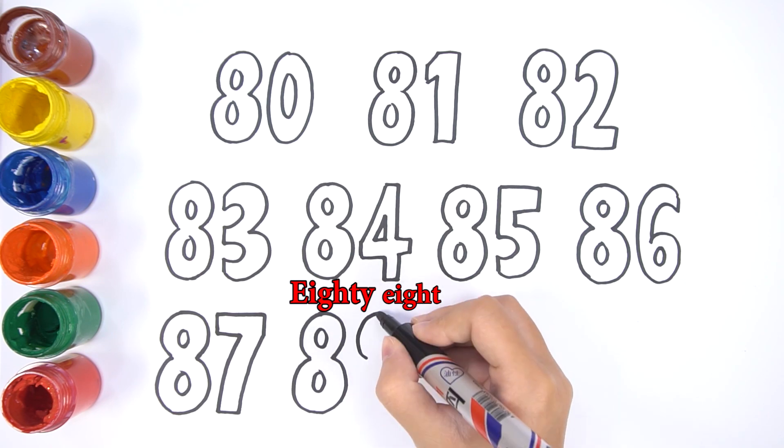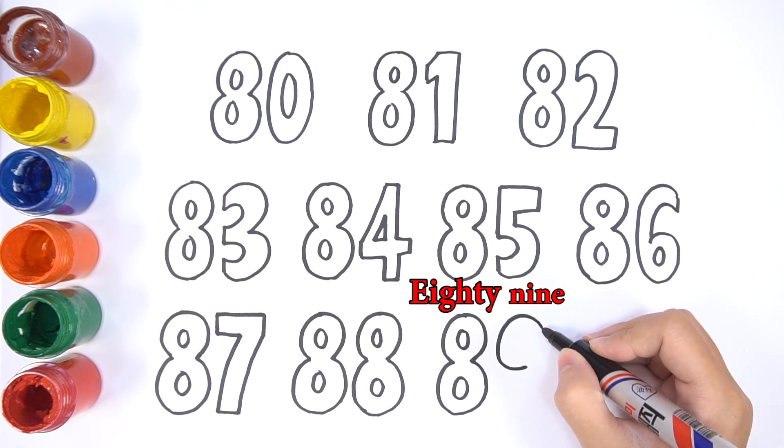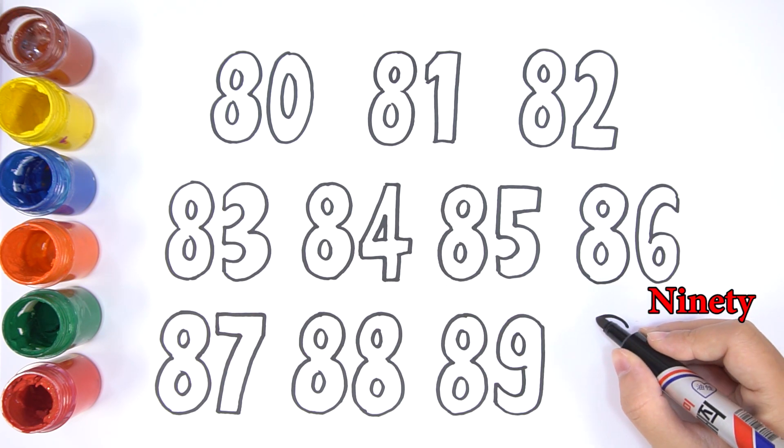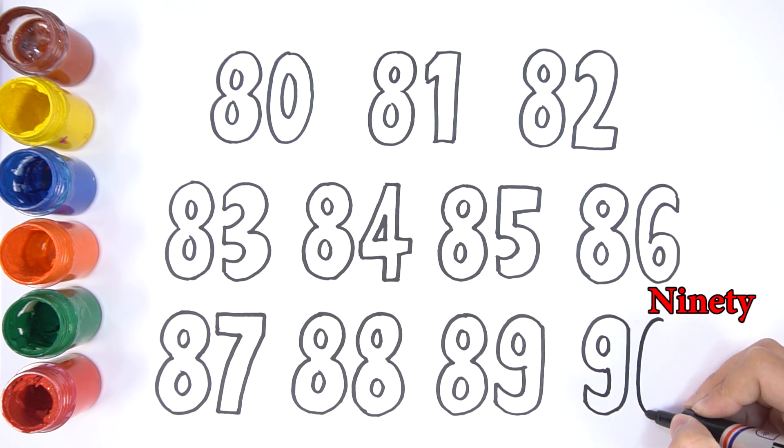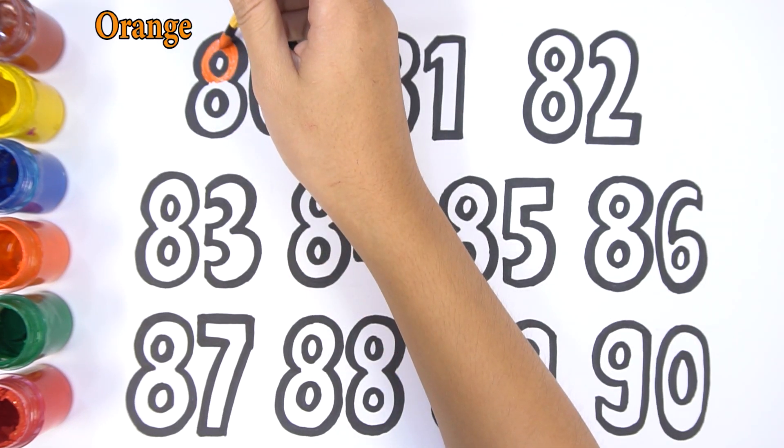Then 88 and 89. Last number is 90. Now let's color the numbers.